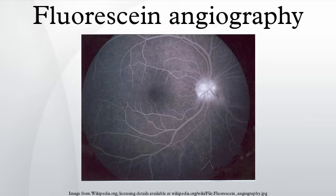A series of black and white or digital photographs are taken of the retina before and after the fluorescein reaches the retinal circulation. The early images allow for the recognition of autofluorescence of the retinal tissues. Photos are taken approximately once every second for about 20 seconds, then less often. A delayed image is obtained at 5 and 10 minutes, and some doctors like to see a 15-minute image as well. A filter is placed in the camera so only the fluorescent yellow-green light is recorded.